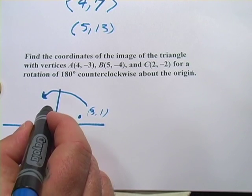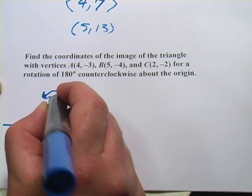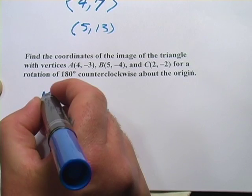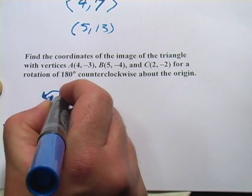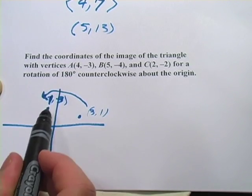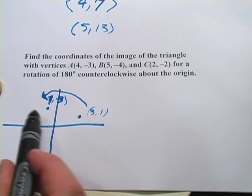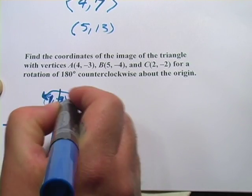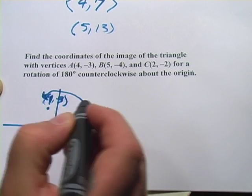It would end up being up here. This would be (-1, 3). So what you can see is that for 90 degrees, we switch the x and the y around, and we make the x-coordinate negative. That's for 90 degrees counterclockwise.